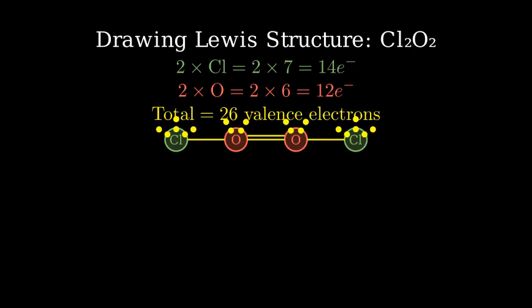Finally, we need to add a double bond between the oxygen atoms to ensure each atom has 8 electrons. And there we have it, the complete Lewis structure for Cl2O2. Each atom has a complete octet of electrons through a combination of bonds and lone pairs.